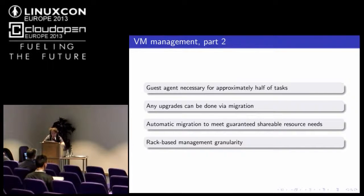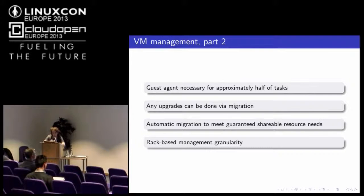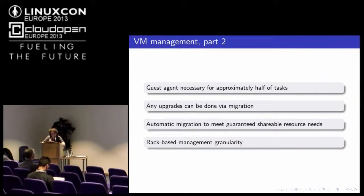We also did automatic migration based on node metrics to prevent resource exhaustion. It's an automatic feature where the orchestrator sees that one parameter — CPU or memory — is close to its limit, then the most greedy VMs are migrated to free nodes. We chose rack-based management granularity because there's no point in sub-scope management for a rack, and a larger scope may have problems with the amount of statistics overwhelming our relational database even with pre-processing.